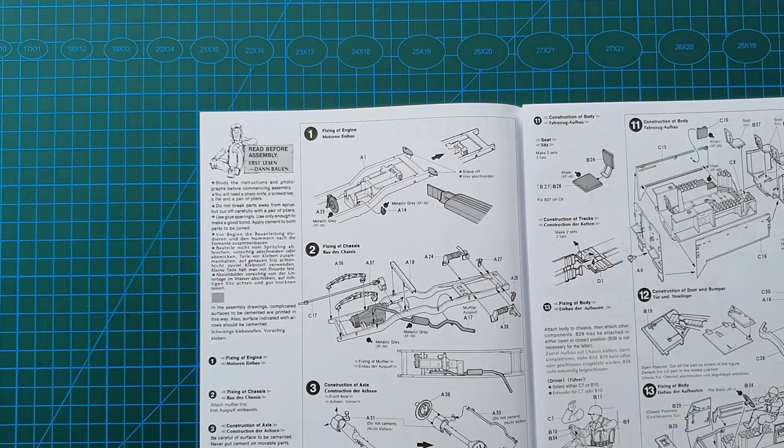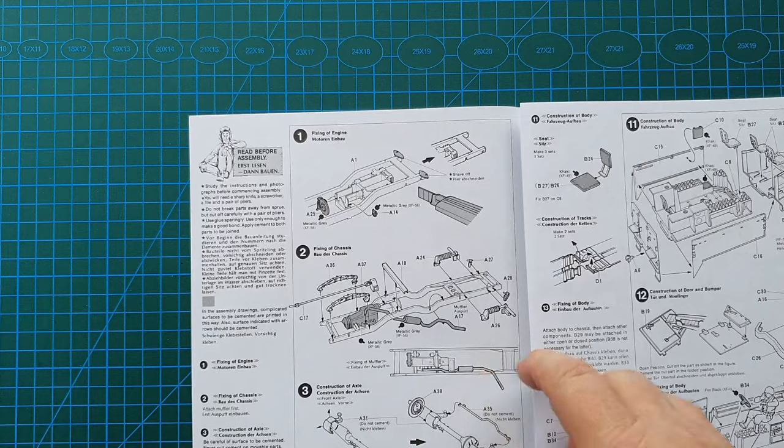It does have a couple parts that need to be removed, mainly because this is the same chassis that they use for the M16 50 caliber quad and also the M3A1 standard personnel half-track. So there are some adjustments that you need to do.